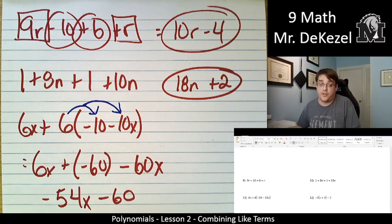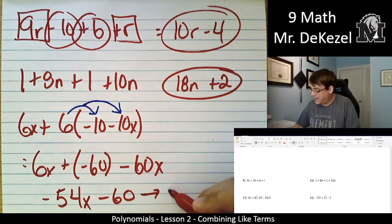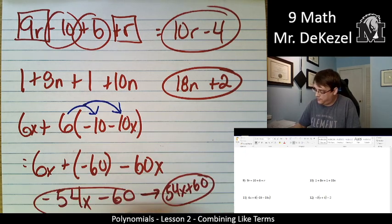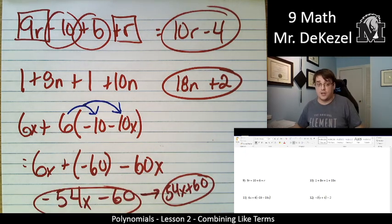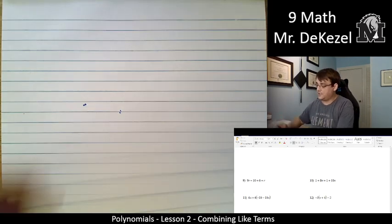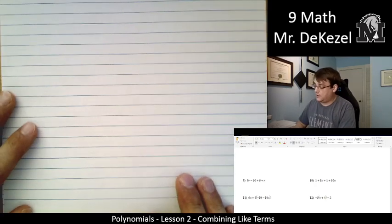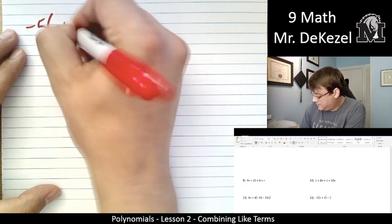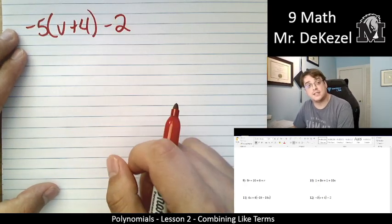You can also go ahead and flip all the signs. If it's all negative, you can flip it all to positive. If you like, you don't have to. That would be 54x plus 60 as well. Both of these would be acceptable answers. If they're both negative, you can flip them all to positive. Let's do one more.